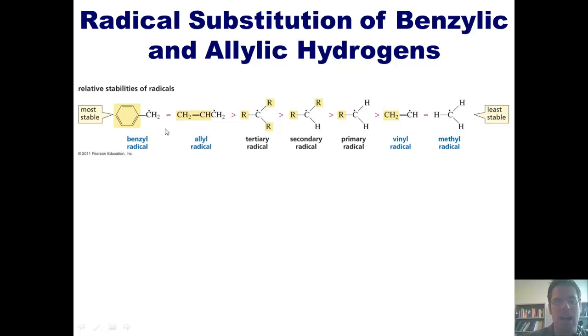As you can see in this slide, benzyl and allyl radicals are very, very stable and are much more stable even than tertiary radicals, which are more stable than secondary radicals, which are more stable than primary radicals, which are more stable than methyl radicals. Vinyl radicals, which are radicals in which I've got a single unpaired electron on one of the two carbons in the carbon-carbon double bond, are also comparably unstable.